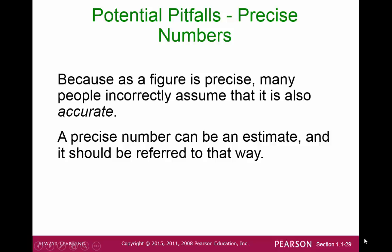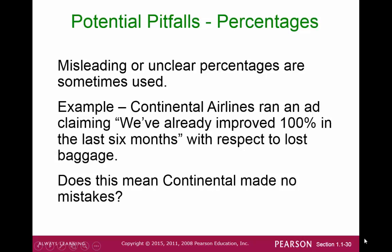Precise numbers can also be misleading — a figure may be precise, but many people incorrectly assume it is accurate. A precise number can be an estimate and should be referred to as such. Percentages may also mislead. For example, an airline claiming 'we improved 100% in the last six months' — does that mean they were perfect, or that their rating went from one to two?